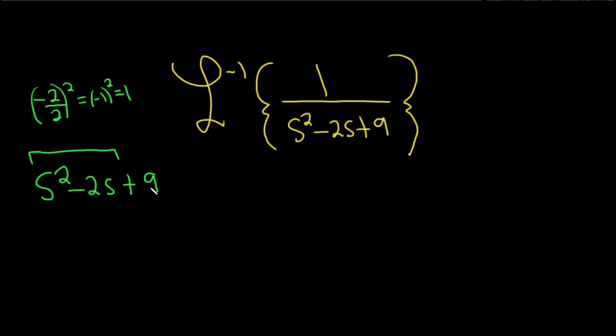So we need a 1. Let's just borrow 1 from the 9. We can write it as s squared minus 2s plus 1 and then plus 8. Take 1 from the 9 and write it like that.